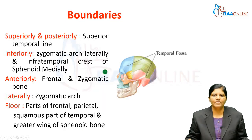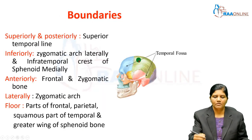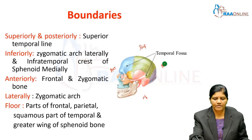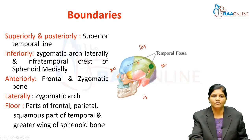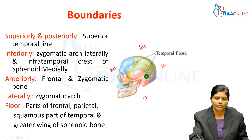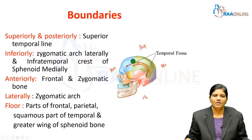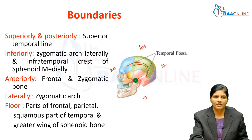Let's see the boundaries. Superiorly as well as posteriorly, the boundaries are the superior and inferior temporal lines. The superior temporal line forms the superior and posterior boundaries. The inferior temporal line is also present in the superior aspect, and inferiorly the boundary is formed by the zygomatic arch.